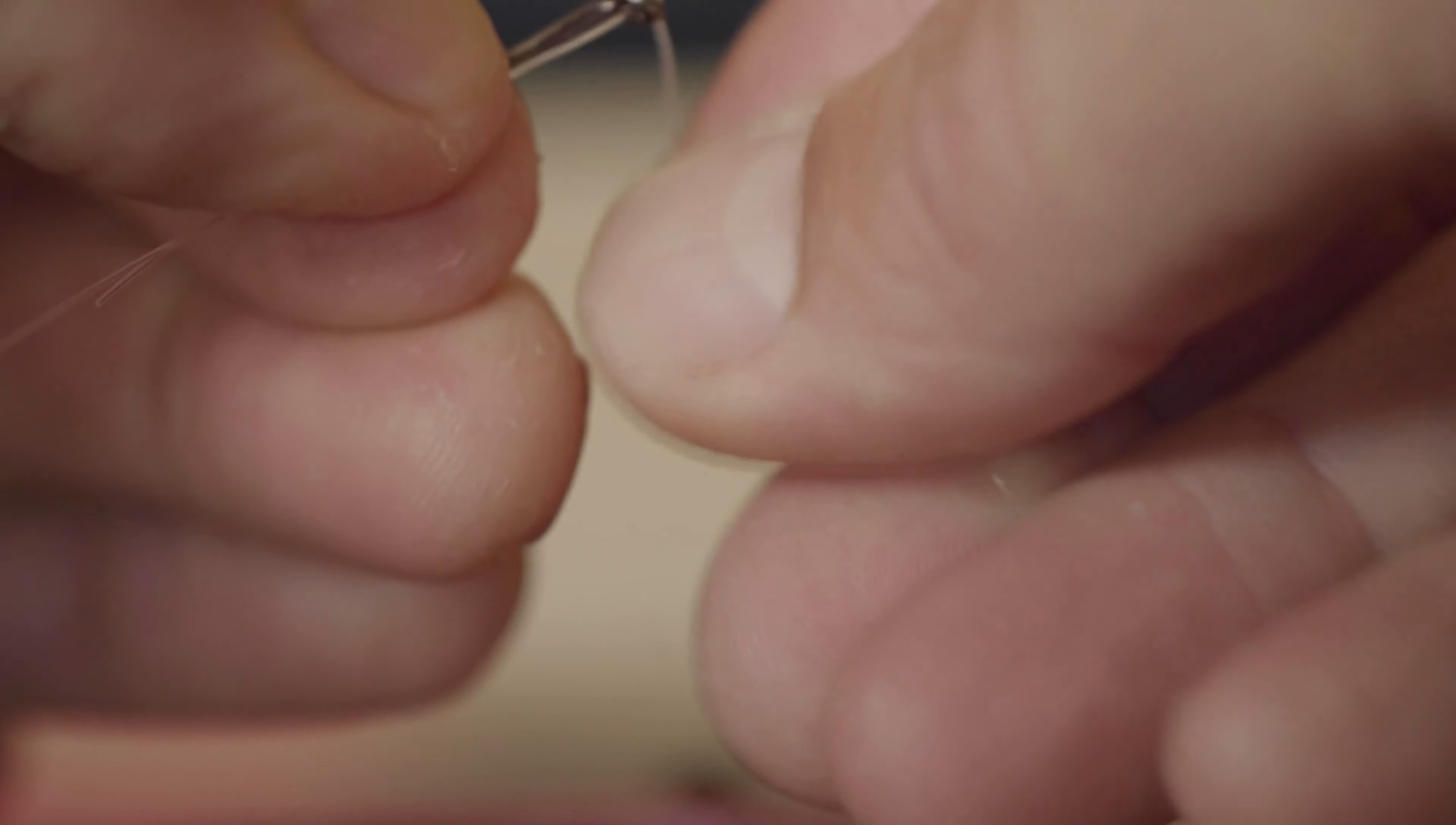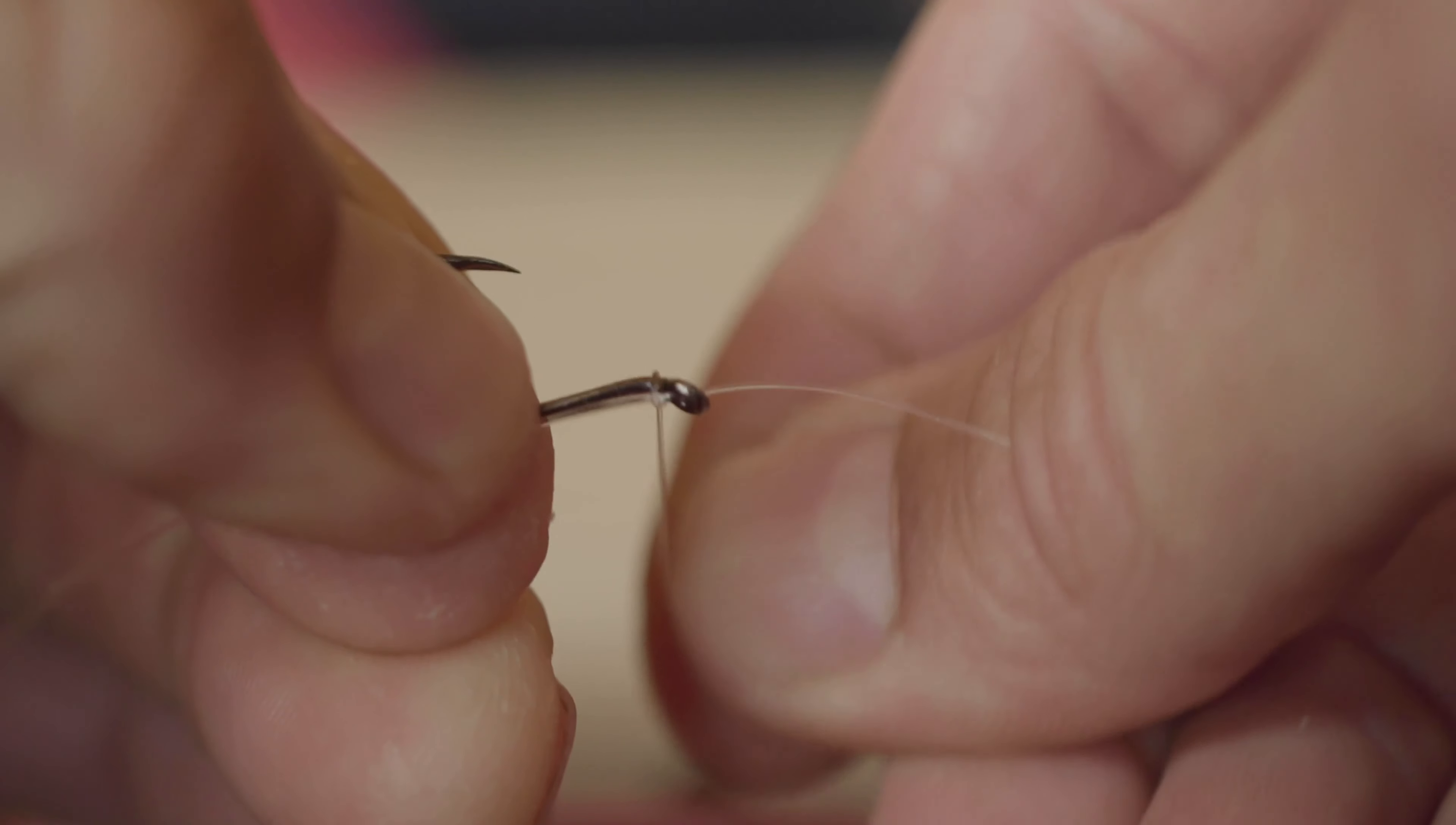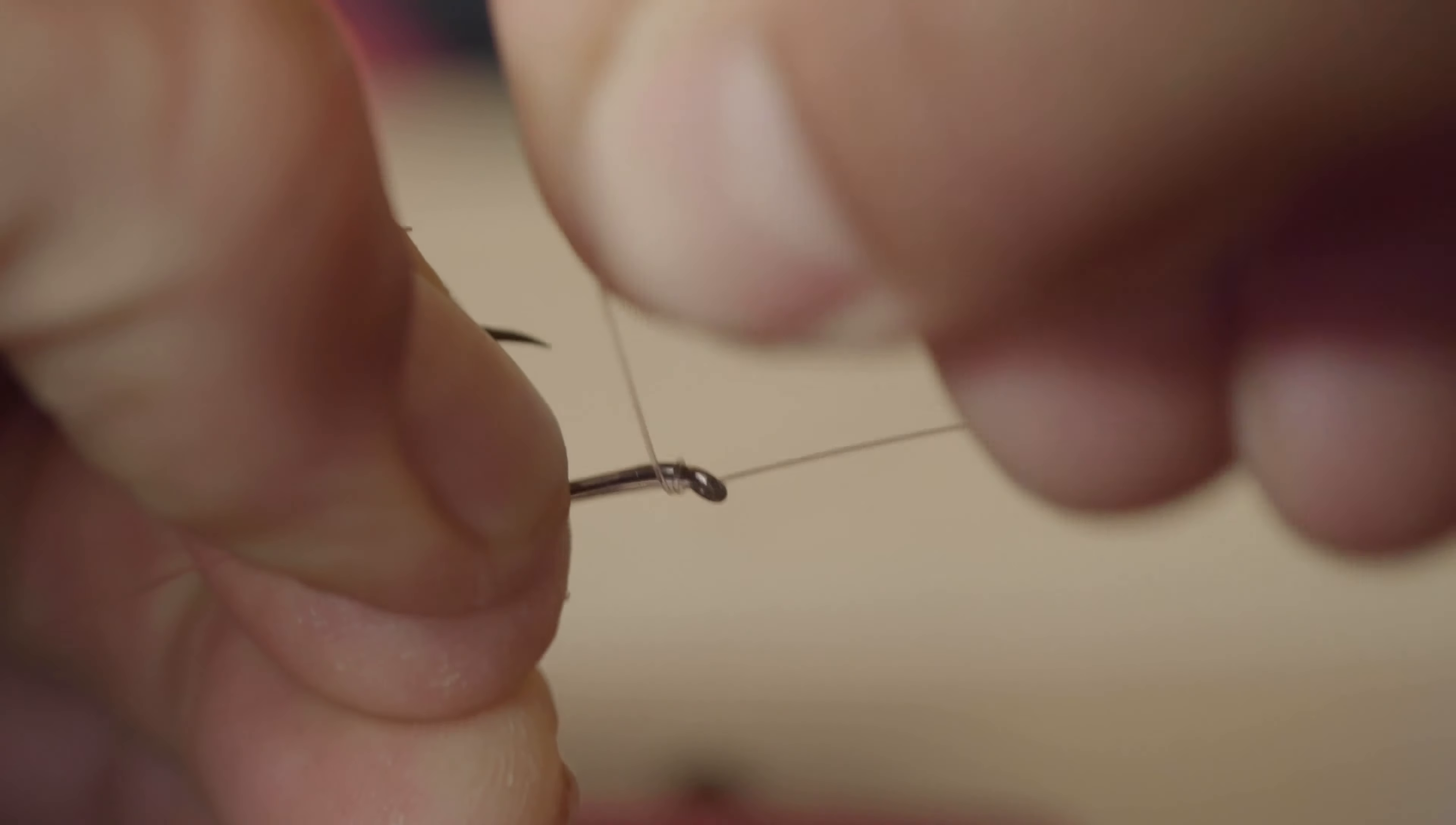Take the top end of this loop, the portion coming out of the top of the eye hole, and wrap that around the shank of the hook eight times. Then grab that one-inch tag end that's sticking out on top while you continue to pinch the line on the shank of the hook throughout this.